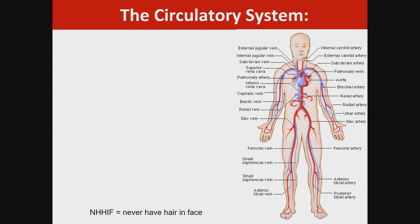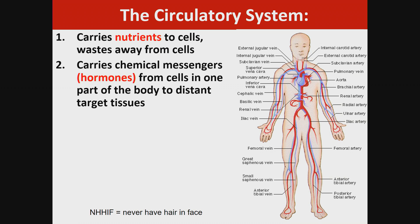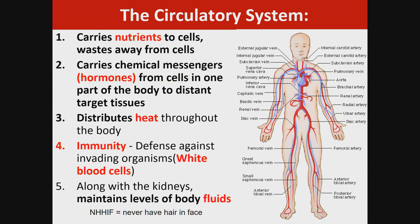Let's talk about the circulatory system. It has five functions: it carries nutrients to cells and wastes away from cells; it carries chemical messengers or hormones from cells in one part of the body to distant target tissues; it distributes heat throughout the body; provides immunity by making white blood cells; and along with the kidneys, maintains levels of body fluids.